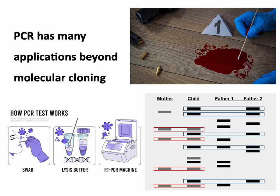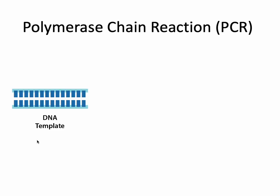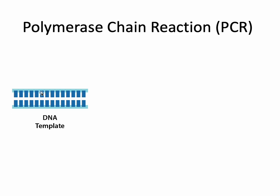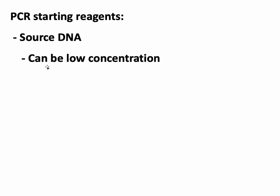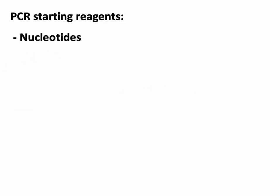Now let's talk about PCR. Before we get into the actual steps, what are the starting reagents in this tube? First and obviously, we've got DNA — some template grabbed from host organism cells — and importantly, this can be at a low concentration since we're going to be amplifying it. Next, because we're doing DNA replication, we need the building blocks of DNA: nucleotides A, G, C, and T — not uracil. We're also going to need nucleotides in this tiny tube.